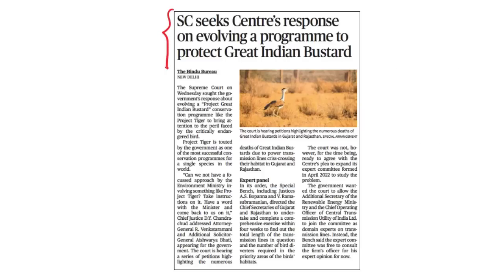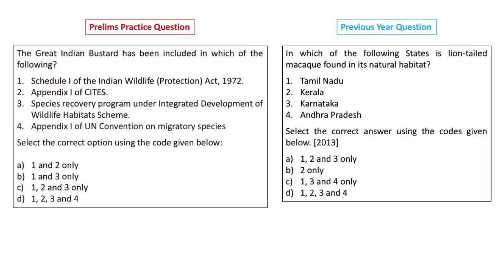The Great Indian Bustard frequently appears in the news and is a very important species. UPSC asks about species that remain in news — it has previously asked about lion-tailed macaque, lions, elephants, and swamp deer. Here is a question on the Great Indian Bustard. It has been included in Schedule 1 of the Wildlife Protection Act 1972, which gives the highest possible protection to any species. Schedule 2 also provides protection but with less stringent punishment. Schedules 3 and 4 prohibit trade but with lower-degree regulations.